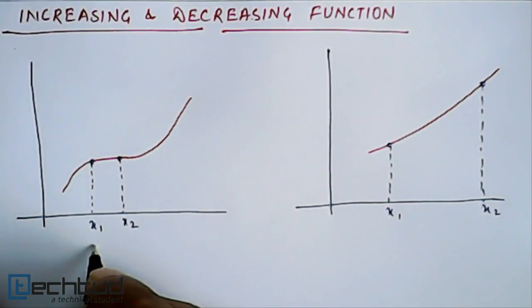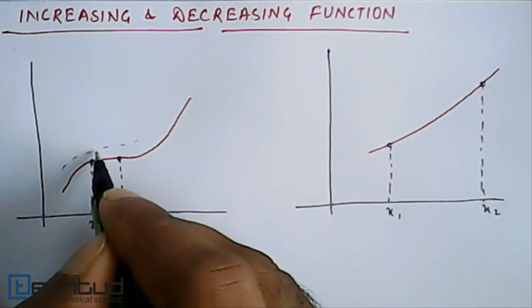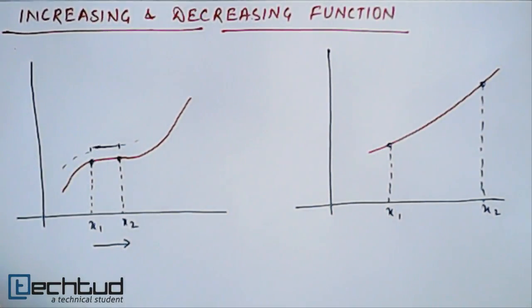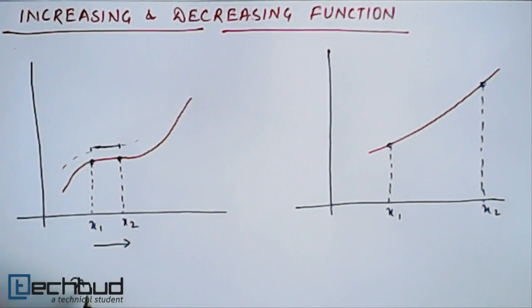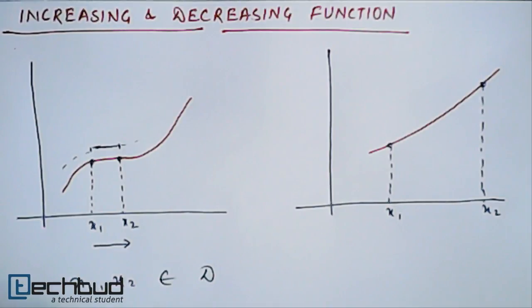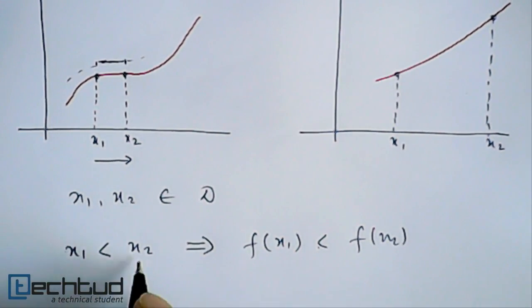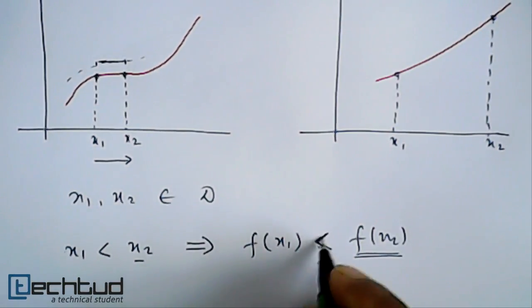With the increase in x, the value of y is increasing, but sometimes it is also not increasing — in this range the value of y is not increasing. So we have two conditions in the case of increasing. For x1 and x2 belonging to the domain of the function, if x1 is less than x2, it implies that f(x1) should also be less than f(x2). So for a greater value of x we have a greater value of the function.